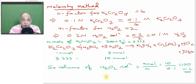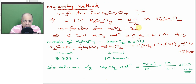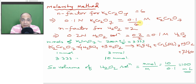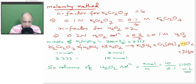The N-factor of potassium dichromate is 6. Therefore, 0.1N is equal to 0.1/6 M — because molarity is numerically a lower number when molarity and normality are not the same. The N-factor for hydrogen peroxide is 2, so the 0.2N hydrogen peroxide solution given in the problem is 0.2/2 = 0.1 M. The molarities are now obtained.